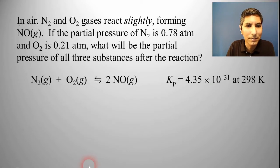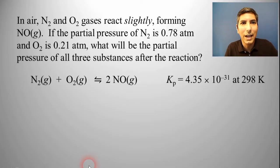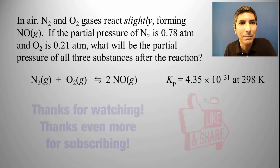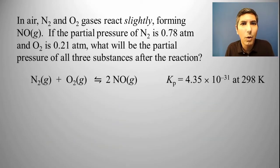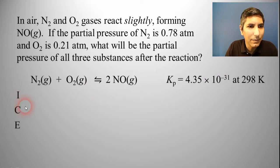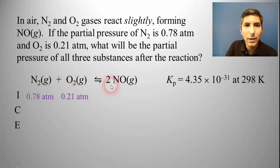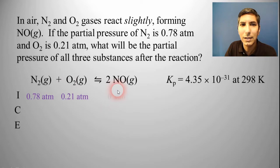Let's take a look at another example here. This one says that in air, nitrogen and oxygen gases react slightly, forming nitrogen monoxide gas. If the partial pressure of nitrogen is 0.78 atmospheres and oxygen is 0.21 atmospheres, what will be the partial pressure of all three substances after the reaction? There's our balanced equation. We notice that our equilibrium constant is an exceedingly small number, times 10 to the negative 31st, that is very small. So I feel very confident that the 5% rule is going to work here. Let's set up our ICE box. Nitrogen, its partial pressure is 0.78, so I'll plug that in. Oxygen's partial pressure is 0.21 atmospheres, and the NO is not given to us. That means that initially it is going to be zero.